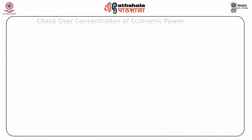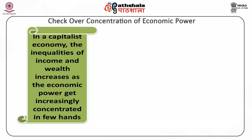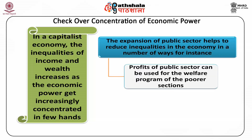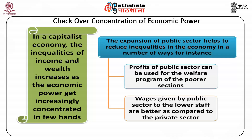Check over concentration of economic power: In a capitalist economy, the inequalities of income and wealth increase as the economic power gets increasingly concentrated in a few hands. The expansion of public sector helps to reduce inequalities in the economy in a number of ways. For instance, first, profits of public sector can be used for the welfare programs of the poorer sections. Second, wages given by public sector to the lower staff are better as compared to the private sector.